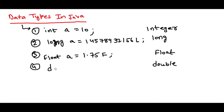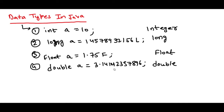The fourth data type is double. Double is again used for storing decimal numbers similar to float, but the difference is that double can store long decimal numbers with greater precision. For example, a number like 3.14142357896 with many decimal places. In float, there is a restriction on the number of decimal places you can store, but in double you can store more decimal places. So if you need to store highly precise numbers, use double; otherwise you can use float.